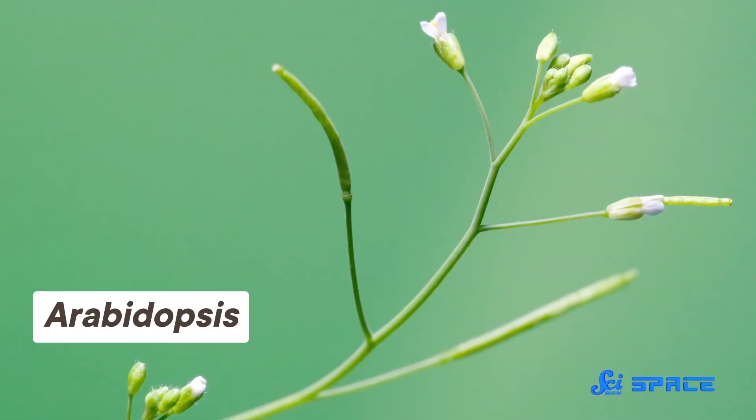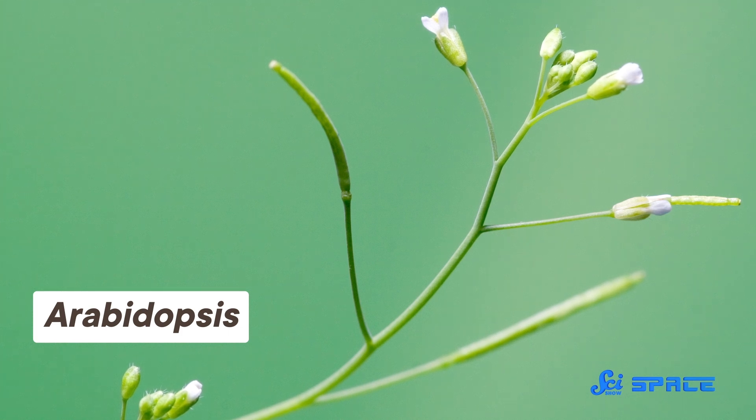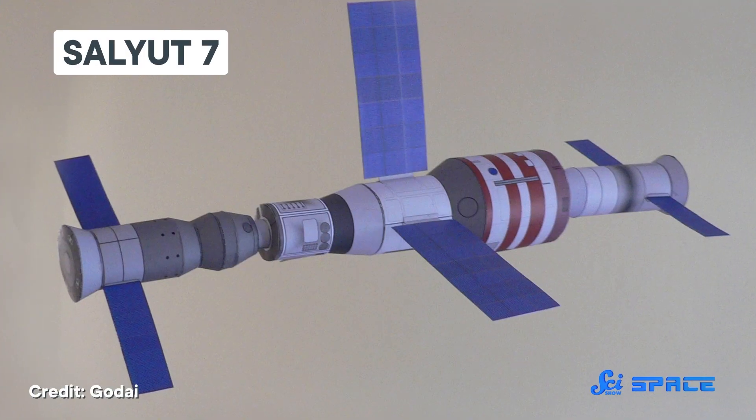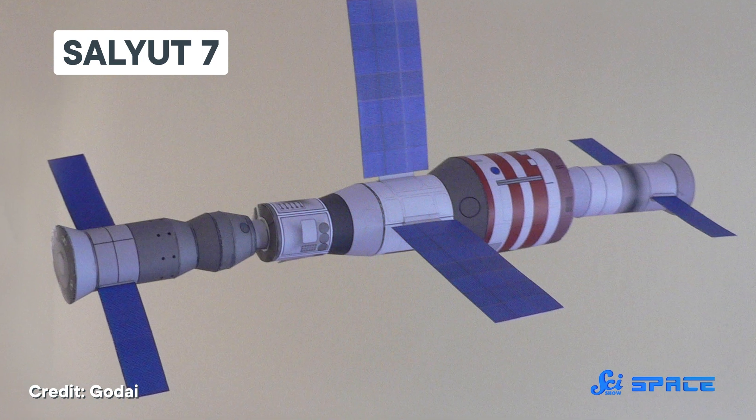One of the first plants astronauts managed to grow in space is Arabidopsis, a cousin to cabbages and radishes and part of the mustard plant family. It's a favorite model for study in the plant world, because its relatively small genome and fast life cycle make it easy to work with. Arabidopsis was first grown in space in 1982 on board the Russian space station.